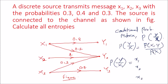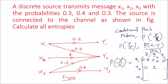Writing the P(Y|X) matrix: rows are x1, x2, x3 and columns are y1, y2, y3. From x1 to y1 the value is 0.8, from x1 to y2 it is 0.2, and there is no link between x1 and y3 so that is 0. For x2: no link to y1 gives 0, a direct connection to y2 gives 1, and no link to y3 gives 0. For x3: 0 to y1, 0.3 to y2, and 0.7 to y3.